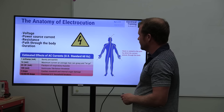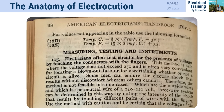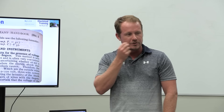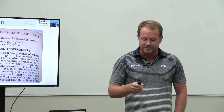We're not going to cover much in our hour and a half, but you will learn some stuff. Here's a historical note: electricians often tested circuits for voltage by touching conductors with their fingers—considered safe up to 250 volts. One manual states: 'Some men can endure the electric shock that results without discomfort, whereas others cannot. Therefore, the method is not feasible in some cases.' It even says for low-voltage bell circuits, you should use your tongue or stand in water with bare feet to perceive the shock. This was written in the 1920s—that's literally how electricians used to work.